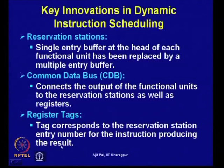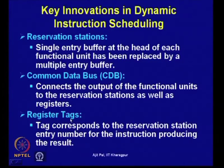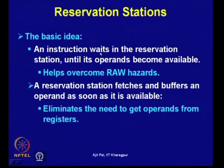Registered tags correspond to the reservation station entry number for the instruction producing results — this maintains which reservation station will produce a result to be used by subsequent instructions. The basic idea is that an instruction waits in the reservation station until operands become available, like a data-flow machine: as soon as data is available, execute it. This leads to out-of-order execution and out-of-order completion.